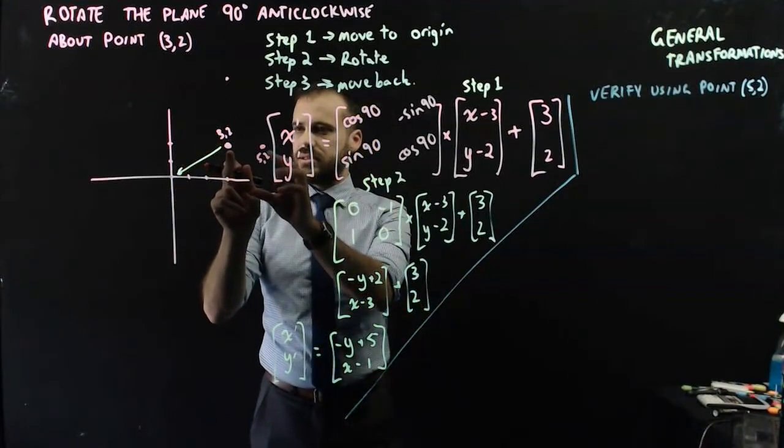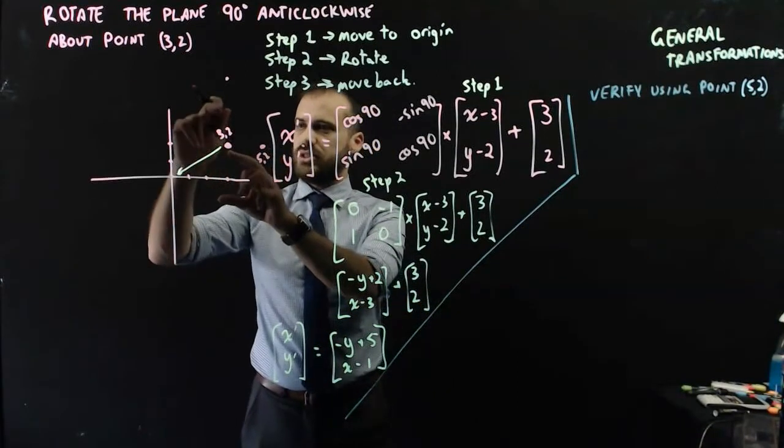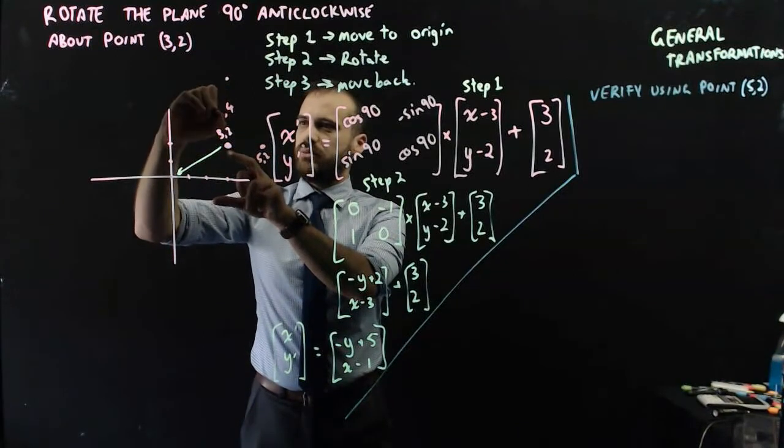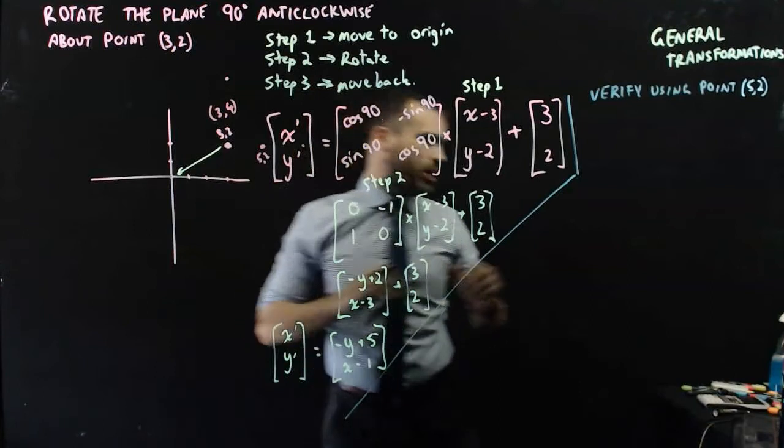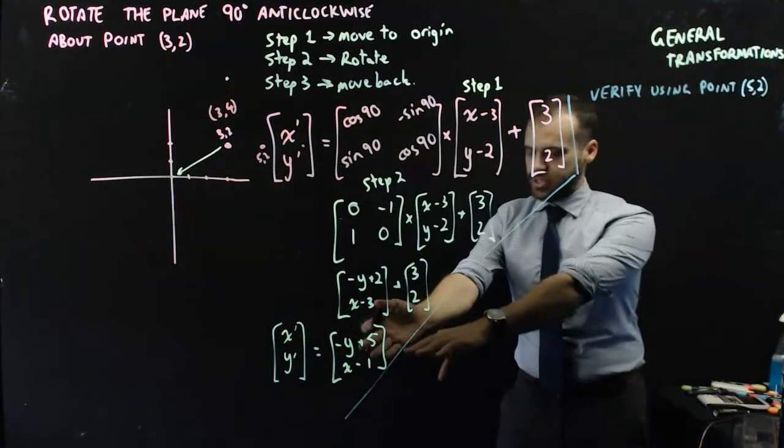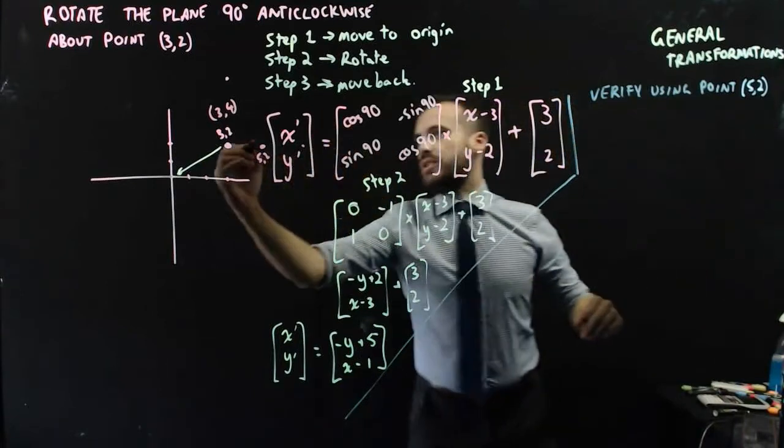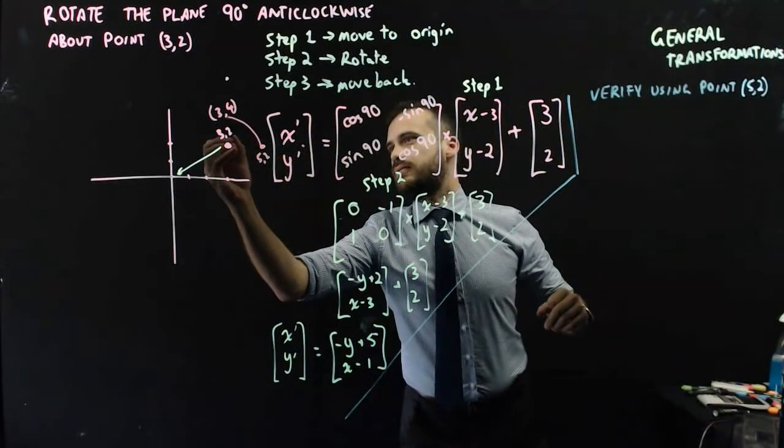there's a distance of 2 there. So it's going to be 2 up from that, which will be 4. And it's going to be in line with that, which will be 3. So I'm hoping that when I use this transformation, I will get (3, 4), that rotation-like. Like that.